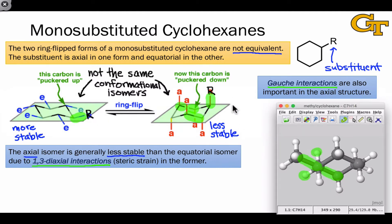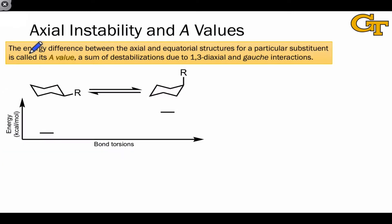Exactly how much less stable the axial conformer is than the equatorial conformer depends on the identity of the substituent. The larger the steric effect of the substituent, the less stable the axial conformer, as these gauche interactions and 1,3-diaxial interactions start becoming more destabilizing as the steric effect grows. We quantify this using the thermodynamic energy difference between the axial and equatorial conformers, referred to as the A-value for the substituent, which we can think of as a sum of the 1,3-diaxial interactions and gauche interactions involving the substituent.